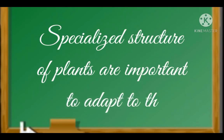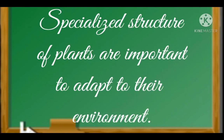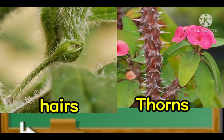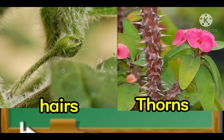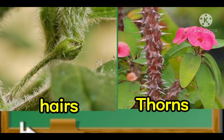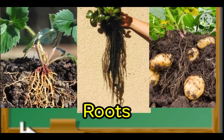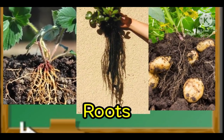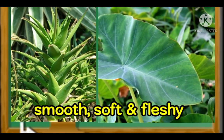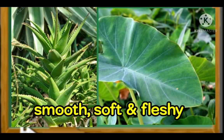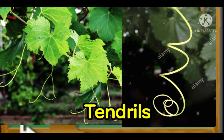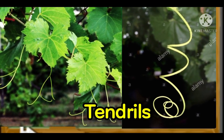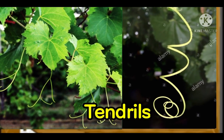Specialized structures of plants are important to help them adapt to their environment. Thorns and hairs are some of the specialized structures — they protect plants from animals, though not all plants have them. Roots are used to absorb water and minerals from the soil. Smooth, soft, and fleshy stems can hold enough water. Tendrils, which are thread-like shaped, are used by climbing plants for support, attachment, and anchoring.